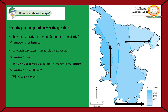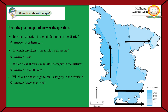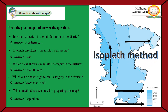Which class shows high rainfall category in the district? Answer: More than 2400. Which method has been used in preparing this map? Answer: Isoplat method.